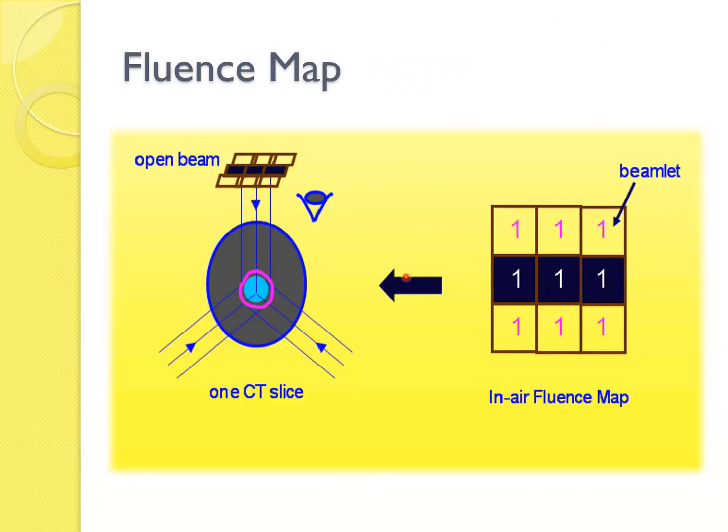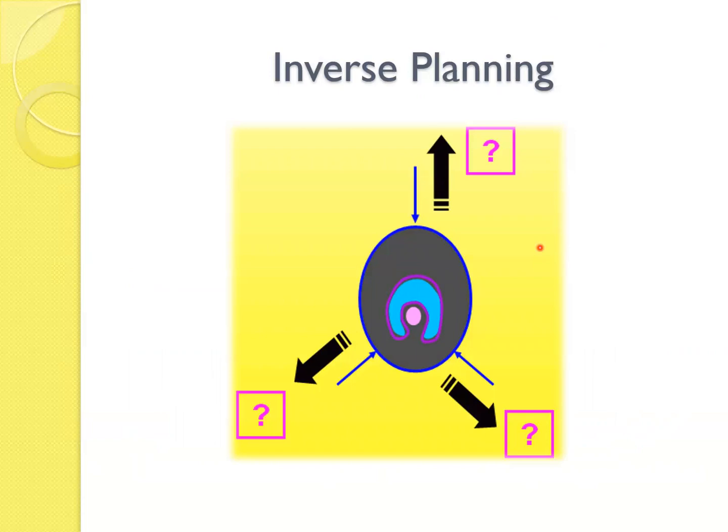Whereas in inverse planning, you do have a target volume, but the fields, yes we have defined the field, but there are options that help you to define the fields, the beam angle optimizer in Eclipse. I'm not aware of the Elekta unit. Then I'll give you the cost function, the priorities, and this is how it will try to achieve what you have given to them.